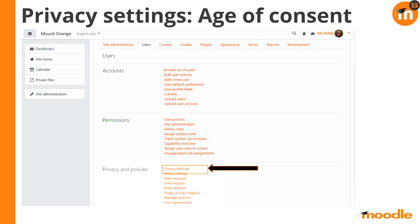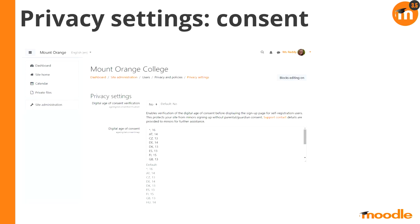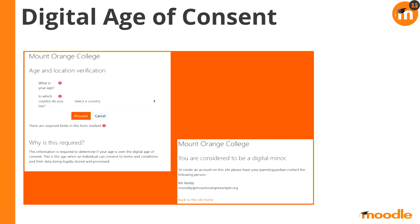Let's have a quick look at age of consent, which we put directly in Core rather than as part of a tool. You access it via the privacy settings link. What this does, if you switch it on, is track the digital age of consent per country. When people register with the site, they're asked how old they are and pick a region, and depending on that region, they'll be matched against the digital age of consent. If they're not above that age, they're told to contact a parent or guardian.